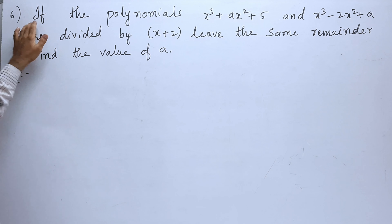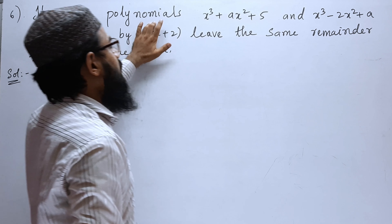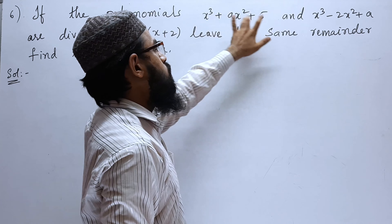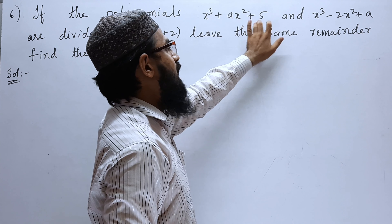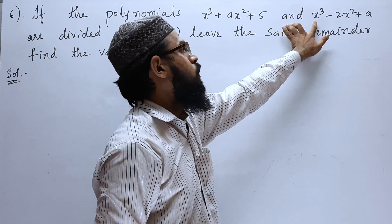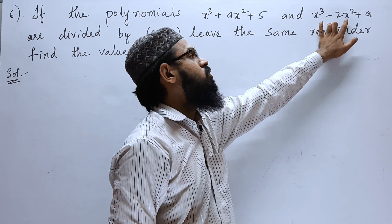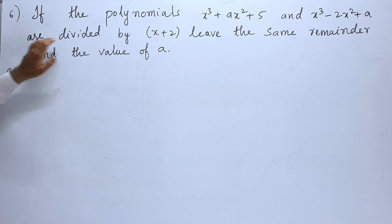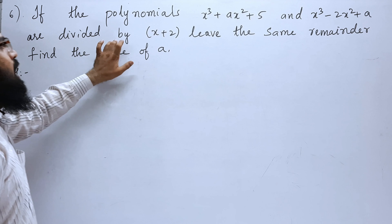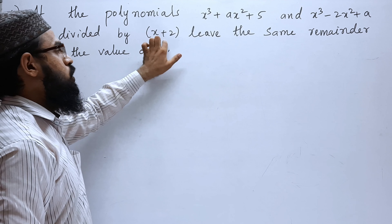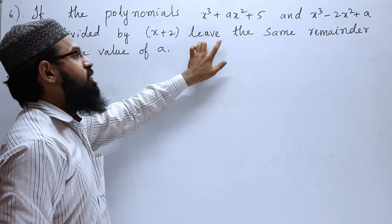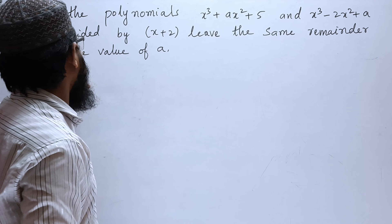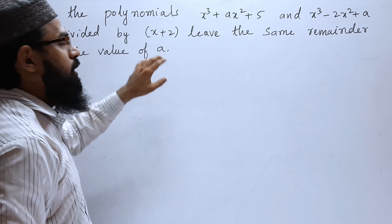Sixth problem: if the polynomials x³ + ax² + 5 and x³ − 2x² + a are divided by x + 2 and leave the same remainder, find the value of a.